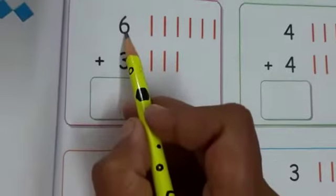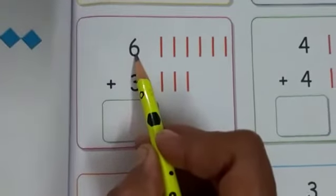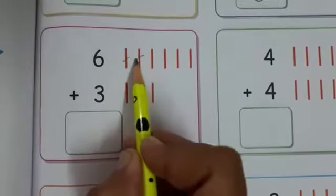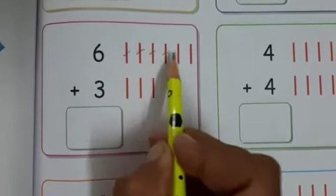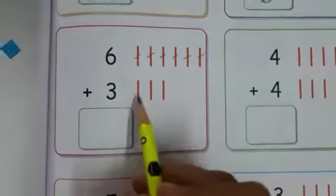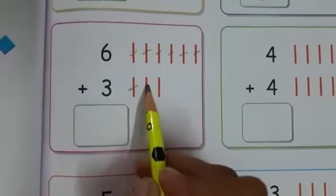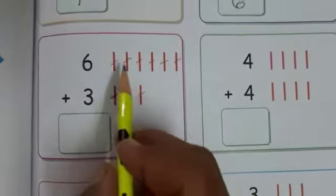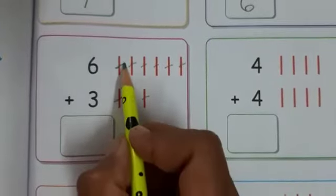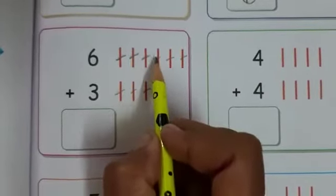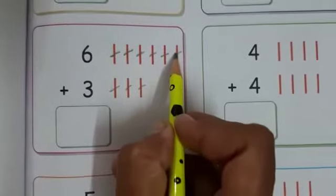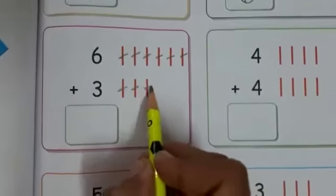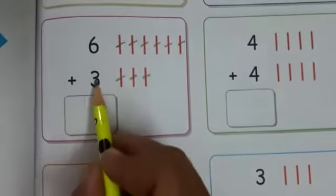This is number 6. Let's count the lines: one, two, three, four, five, six. Other side: one, two, three. How many total lines are there? Count it: one, two, three, four, five, six, seven, eight, nine. Six plus three is equal to nine.